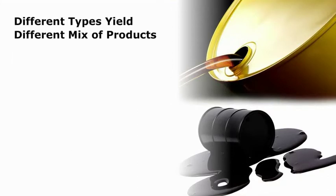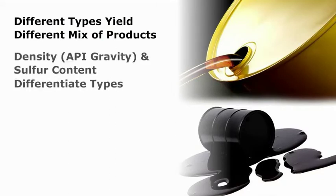Different types of crude oil yield a different mix of products depending on the crude oil's natural qualities. Their density, measured as American Petroleum Institute or API gravity, and their sulfur content typically differentiate crude oil types.